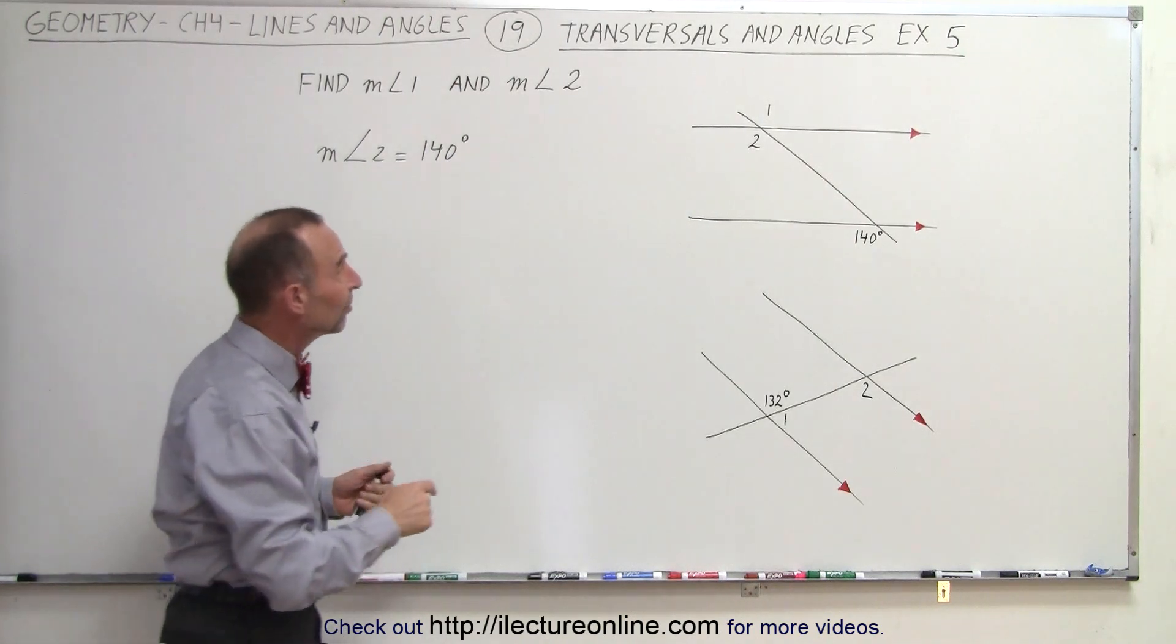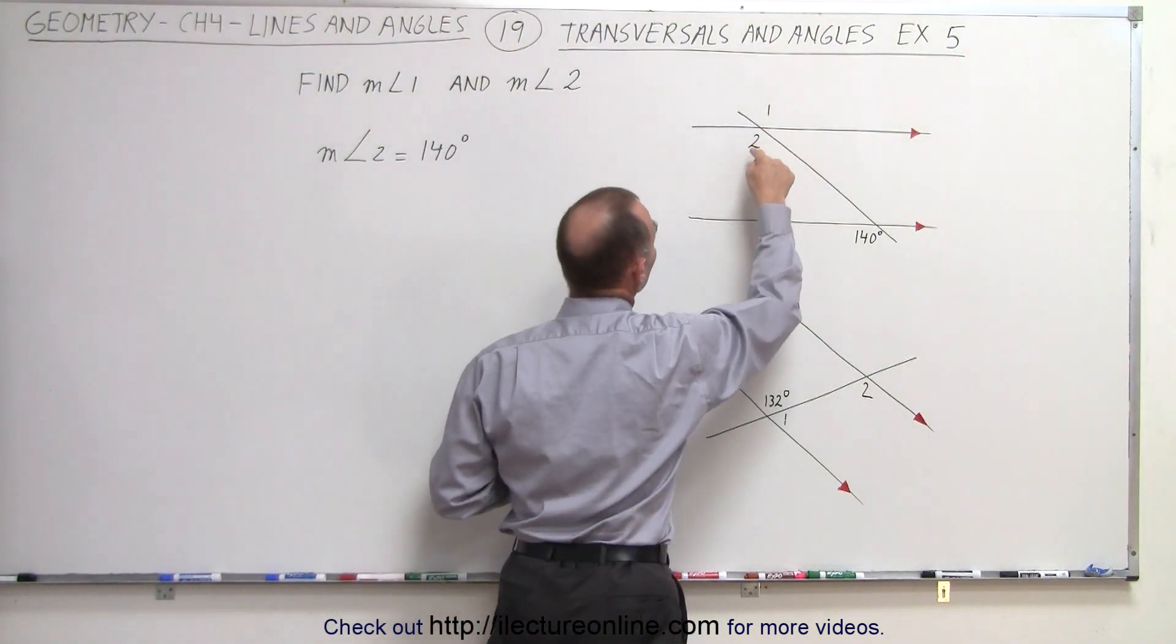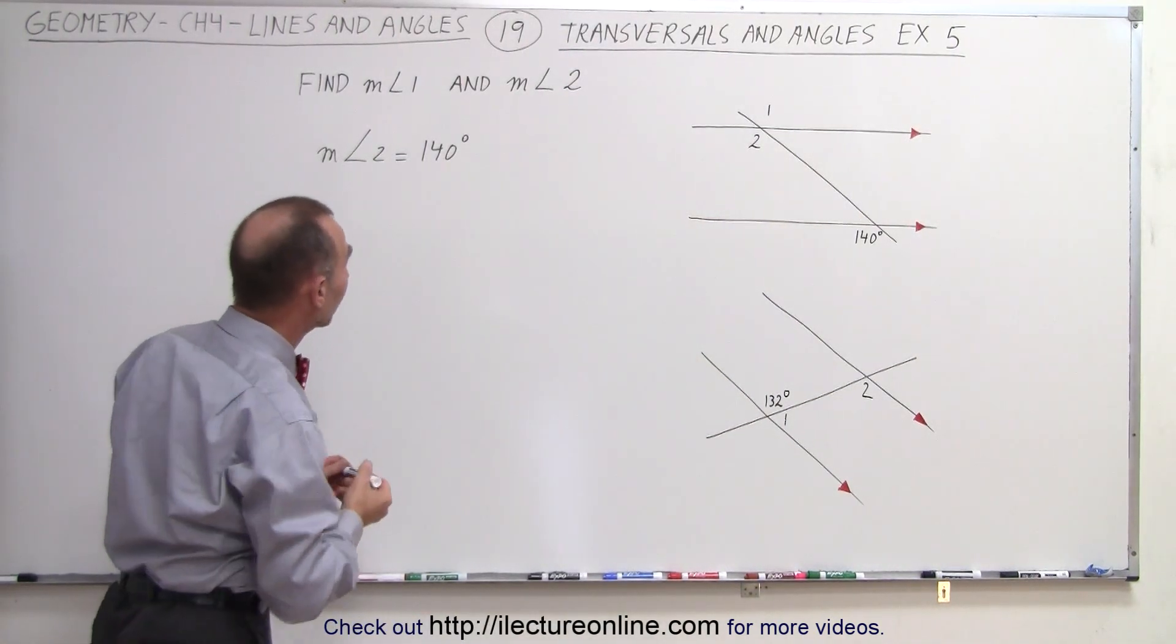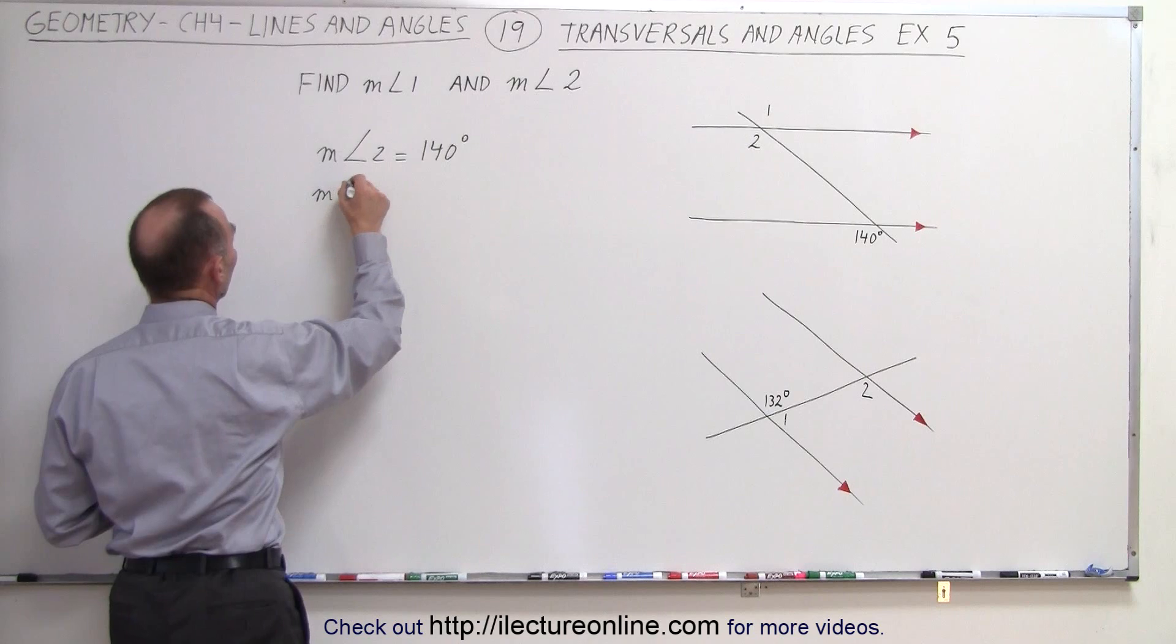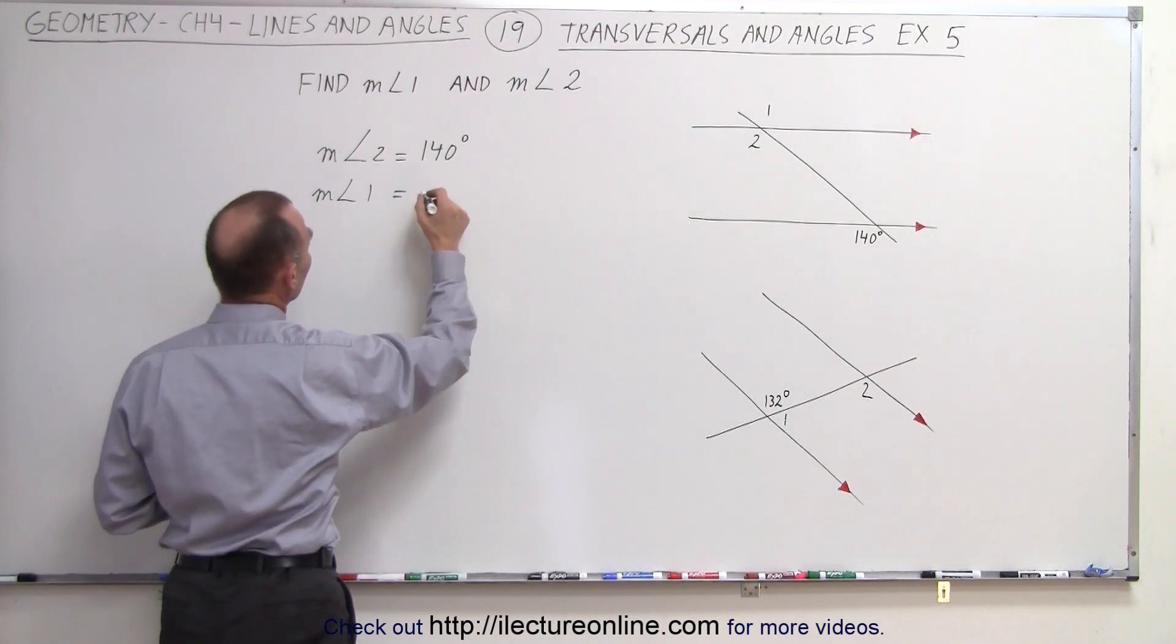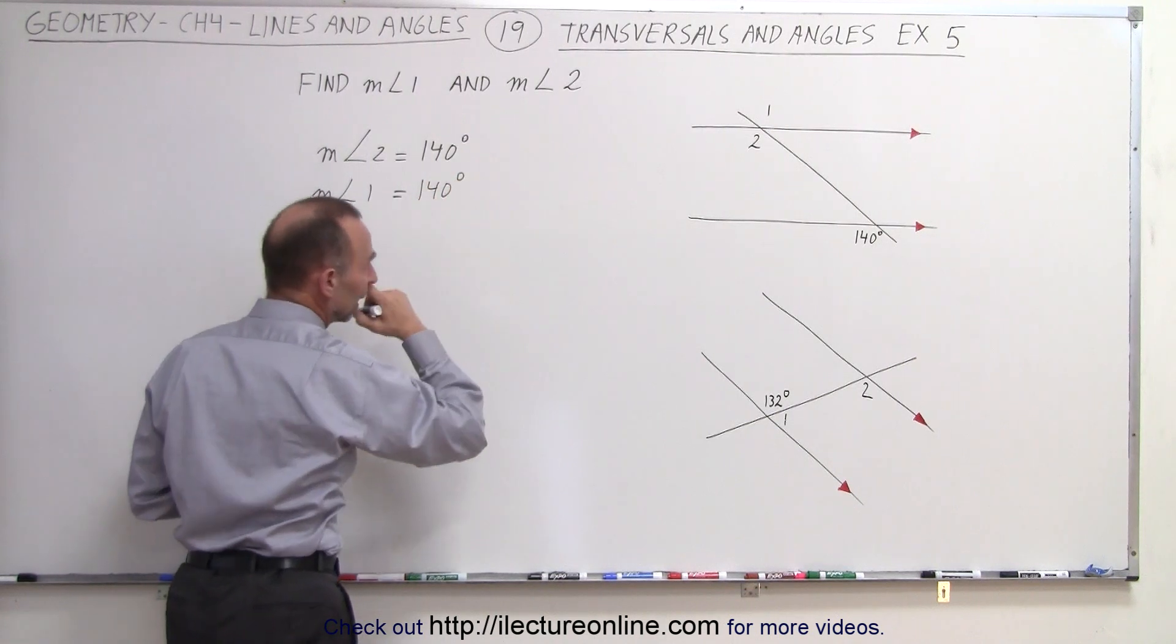Now we take a look and see that angle 1 and angle 2 are opposite angles, and we know that opposite angles must have the same measure. Therefore, we know that the measure of angle 1 must be equal to the measure of angle 2, and therefore must be equal to 140 degrees as well.